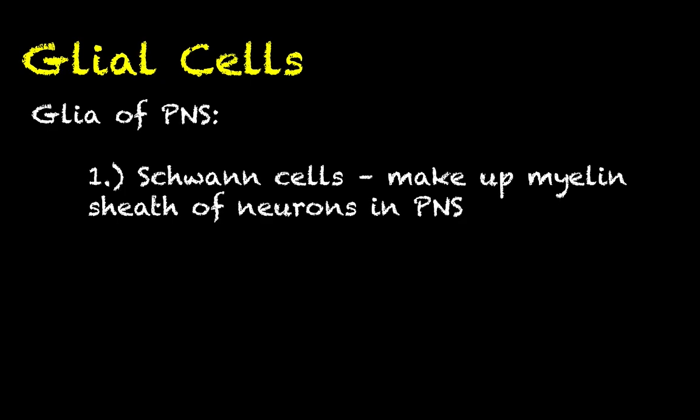We will talk a lot more about neurons when we actually start covering the nervous system. As for glial cells, there are a lot of different types, but what they all have in common is that they all serve some kind of support role. The types of glial cells differ based on whether we're talking about the peripheral nervous system or the central nervous system.